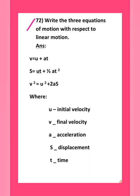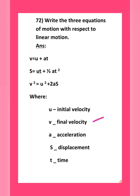Question number 72: write the three equations of motion for linear motion. The equations are: v = u + at; s = ut + ½at²; and v² = u² + 2as. Here u is initial velocity, v is final velocity, a is acceleration, s is displacement, and t is time.